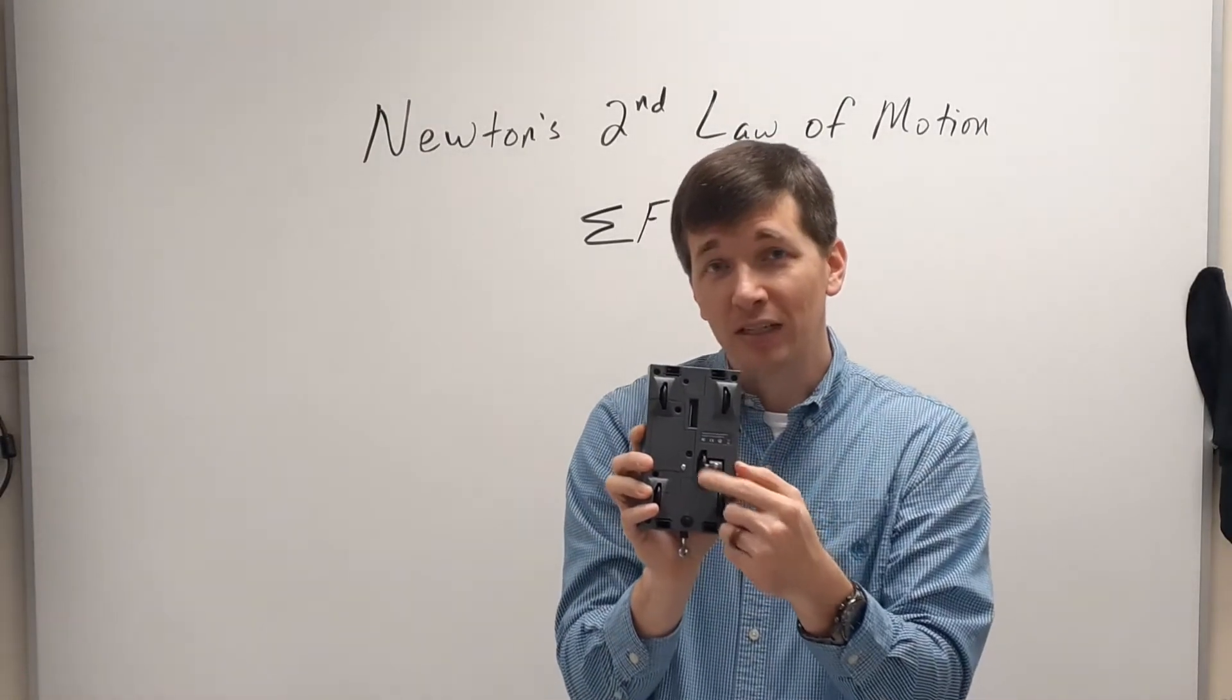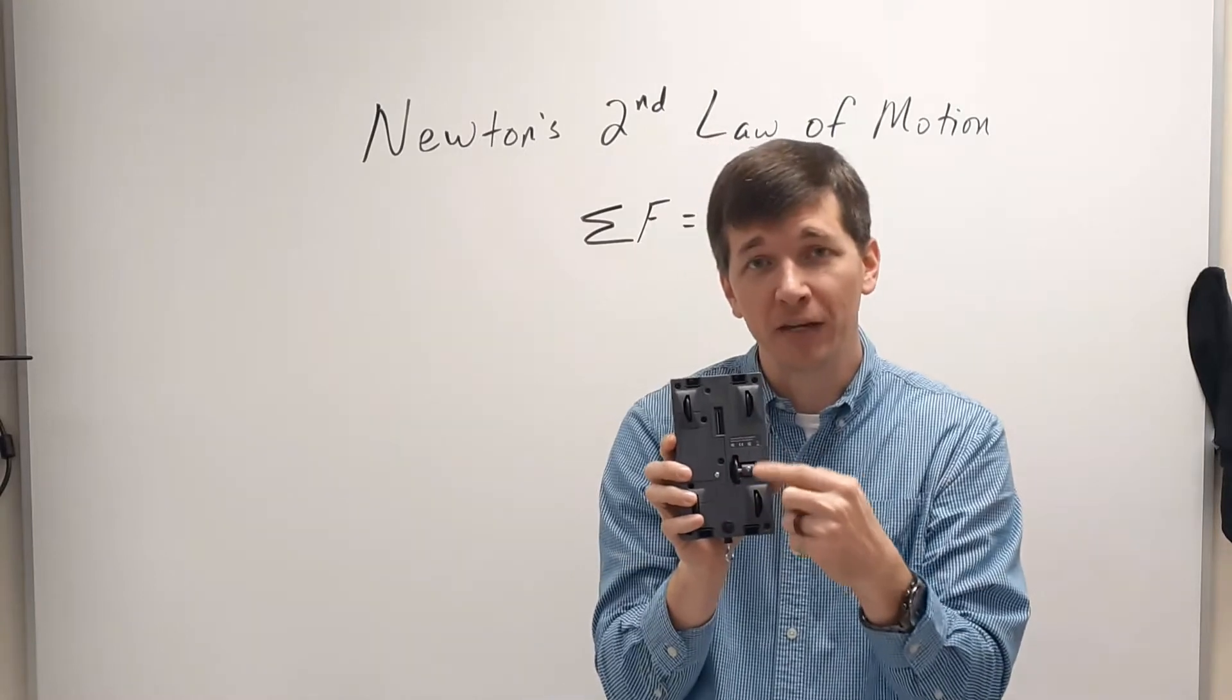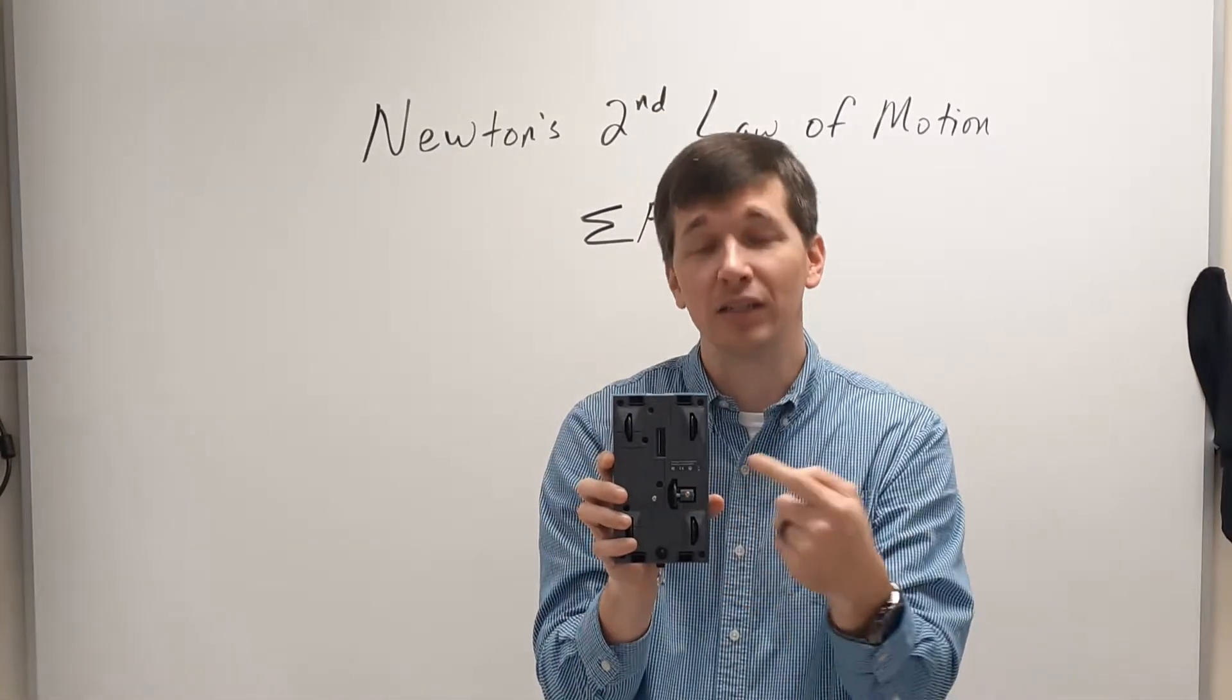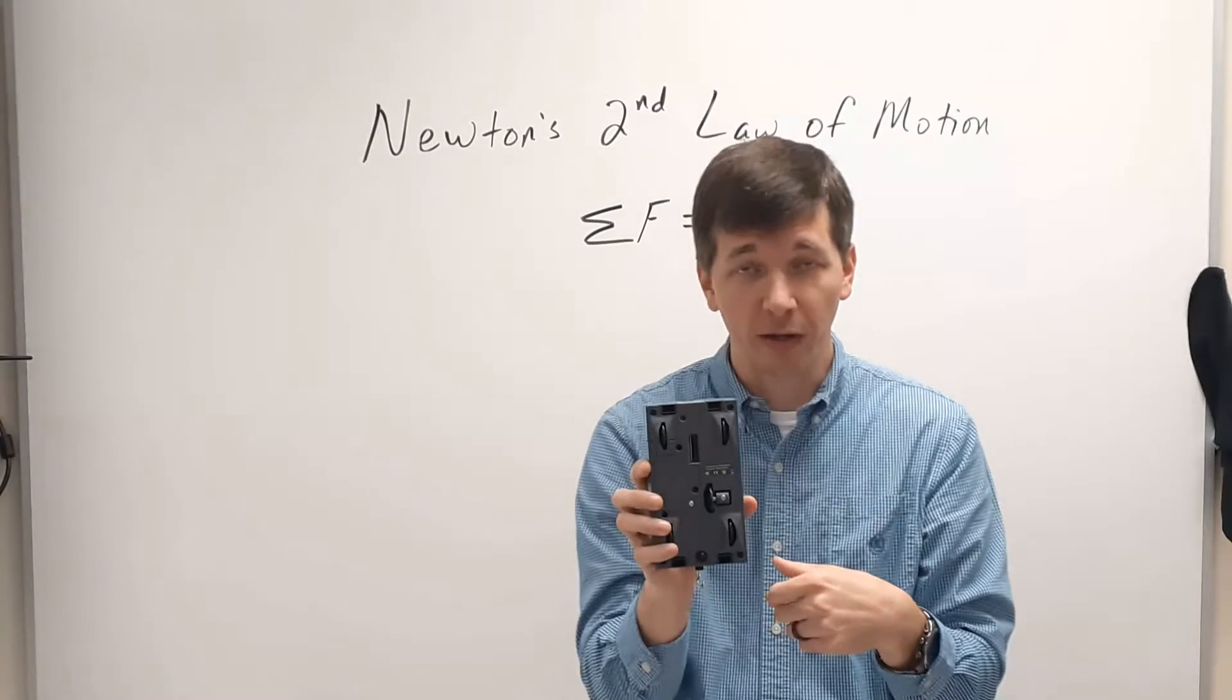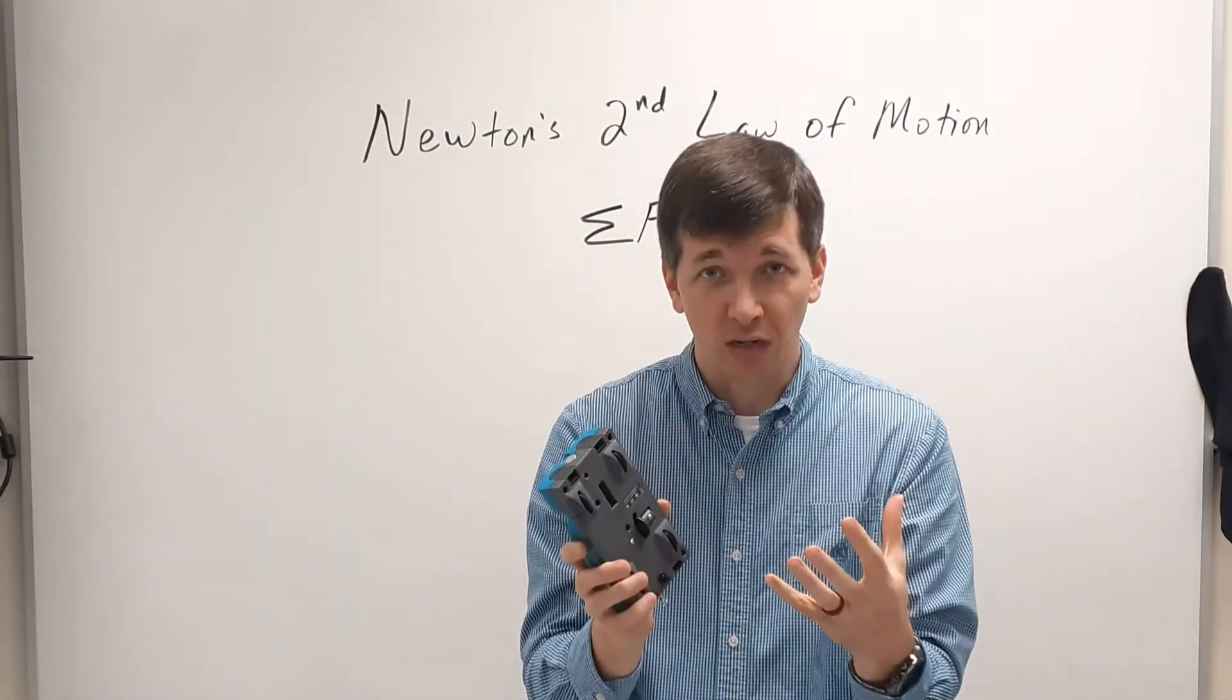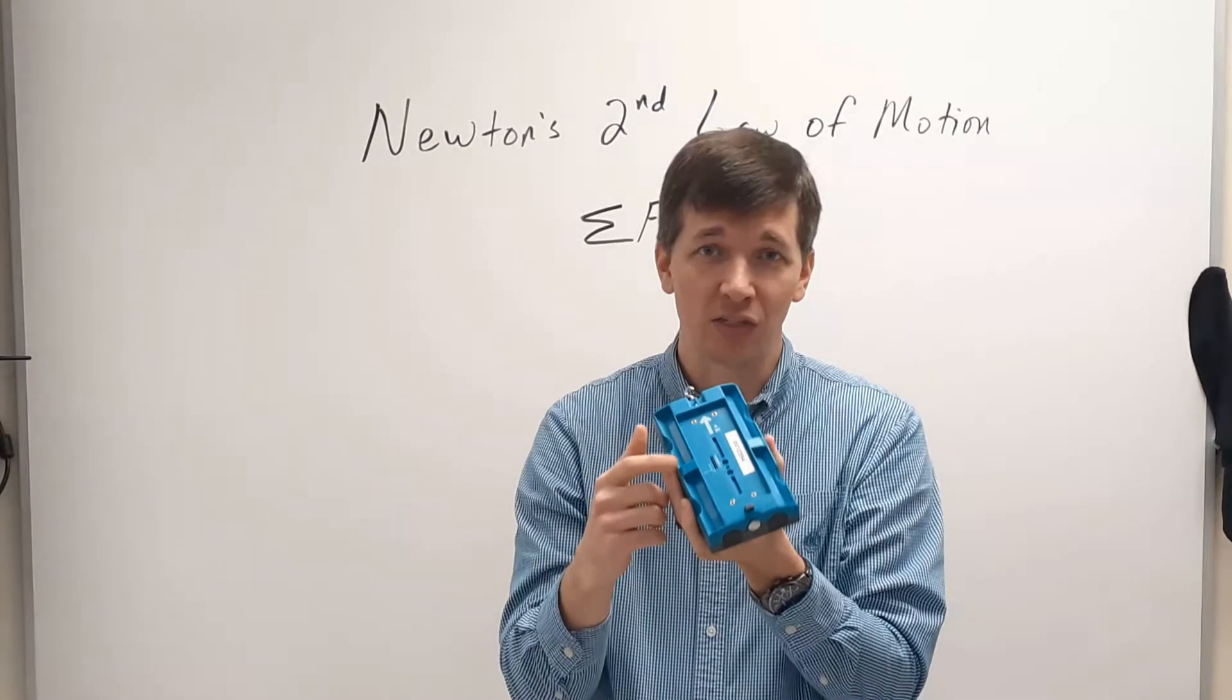There's going to be very little friction in these wheels and ball bearings to worry about. So we're just assuming that the net force is the force being applied by my hand. It also has a built-in accelerometer. So this little wheel on the bottom is able to measure the car's change in position. That'll let the LabQuest calculate its velocity and then in turn calculate its acceleration as well.